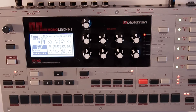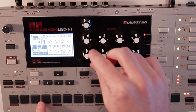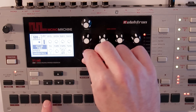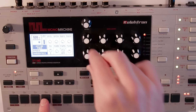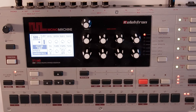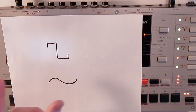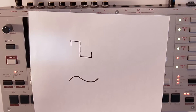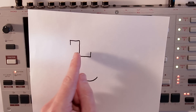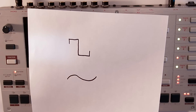Hey everyone, you've probably heard of pulse width modulation if you've been around synthesizers for a while. It's a pretty common effect that you can find, and it sounds something like this — I'm using the Mono Machine here. You might know that the reason that happens is you take a square wave and pinch it down so that one side is very narrow compared to the other.